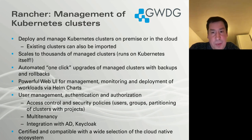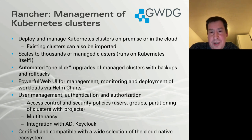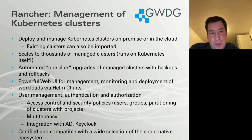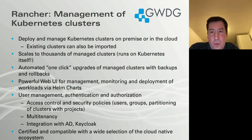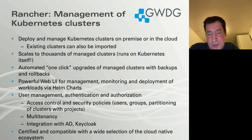Rancher scales to thousands of managed clusters. It itself runs on Kubernetes, so it's possible to deploy Rancher as a single Docker container, but for production use — if one needs to manage hundreds or even thousands of clusters — one needs to deploy it on a dedicated Kubernetes cluster. Rancher provides automated one-click upgrades of managed clusters and also provides backups and rollbacks, which is very important for production use. If an upgrade of Kubernetes somehow goes horribly wrong, one still has the ability to go back to the last version.